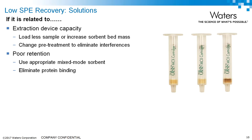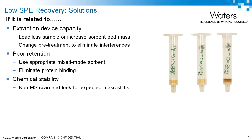If you have poor retention, we talked about the value of binding by ion exchange, both for specificity and for very polar compounds. If you charge the analytes upon loading and choose the correct mixed-mode sorbent, they will bind by ion exchange immediately, which is a very strong binding mechanism. Another possibility for poor retention is that analytes are actually bound to plasma proteins and pass right through on the load step — in that case, you'd want to eliminate protein binding.